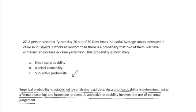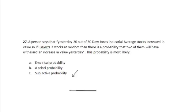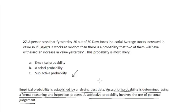In this case, the person says that yesterday 20 out of 30 Dow Jones Industrial Average stocks increased in value, and if three stocks are selected at random, two of them will have witnessed an increase. In this context, the person is using his own formal reasoning and inspection process. He is not using historical data, because the data taken is only from yesterday.